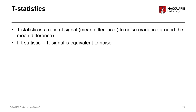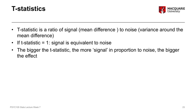If our t-statistic equals one, it means that the numerator is exactly the same as the denominator — so the signal is equivalent in size and magnitude to the noise. The bigger our t-statistic, the more signal there is in terms of the difference between scores in proportion to the amount of variability around that difference, and therefore the bigger the effect in very simple terms.